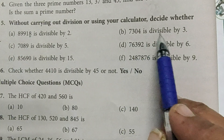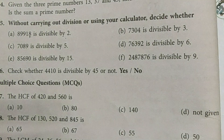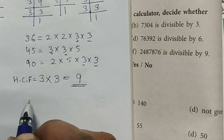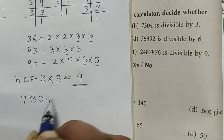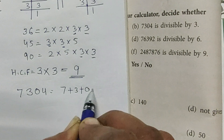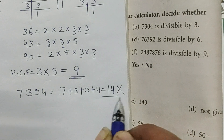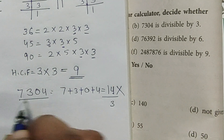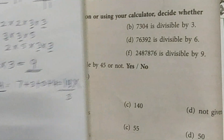Is 7304 divisible by 3? We calculate the sum of digits: 7 + 3 + 0 + 4 = 14. 14 is not divisible by 3, so this number is not divisible by 3. Answer: No.